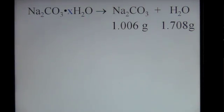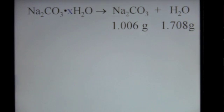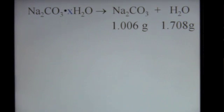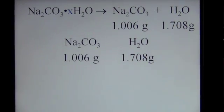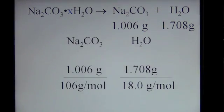To change grams to moles, all you have to do is divide by the molar mass. For the anhydrous sodium carbonate, using the periodic table: sodium has atomic mass 23, carbon is 12, and oxygen is 16. So we calculate 2×23 + 12 + 3×16, which gives the molar mass of sodium carbonate as 106 grams per mole. For water, each hydrogen is worth 1 and oxygen is 16, giving a molar mass of 18 grams per mole. Dividing grams by grams per mole leaves you with moles.